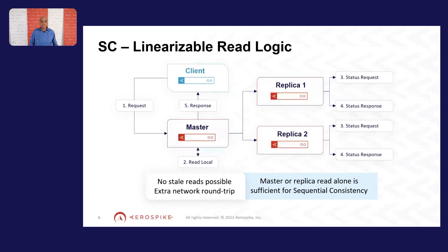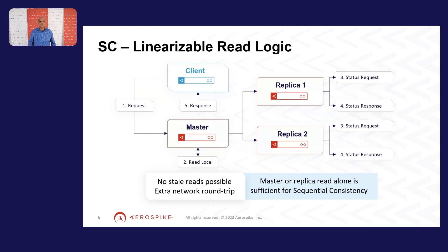There is an optimization that can be done by relaxing this level of consistency for reads to be sequentially consistent. What it means is that a particular application or client that writes a particular data item is guaranteed to read that data item if the read is dispatched after the write within that application or client thread. This is called sequential consistency, and it's also a strong consistency mechanism. Aerospike supports tunable consistency — we can even relax consistency further.